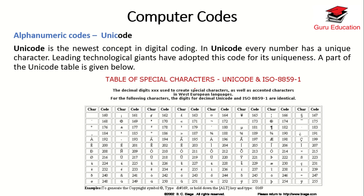In alphanumeric codes, the last code that comes is Unicode. Unicode is the newest concept in digital computing. In Unicode, every number has a unique character. Leading technology companies have adopted this code for its uniqueness. A part of the Unicode table is given below — for example, when you write 'A', it has a specific code; when you write 'E', it has a different code. Different languages have different characters with different codes. You can see all the different codes — for symbols, there is a specific code written against them.